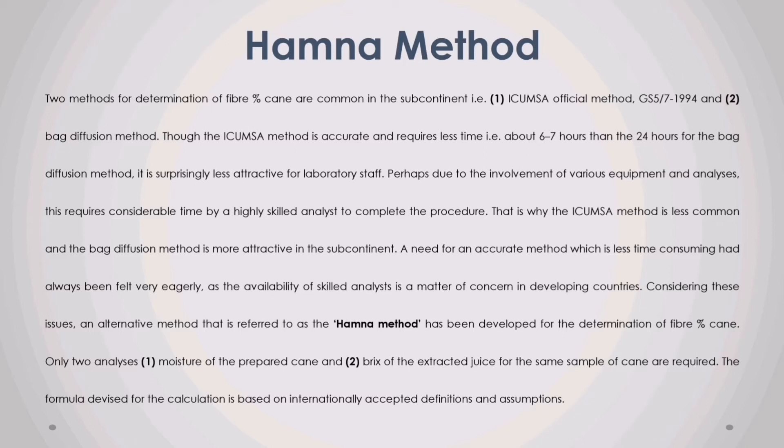A need for an accurate method which is less time-consuming had always been felt very eagerly, as the availability of skilled analysts is a matter of concern in developing countries. Considering these issues, an alternative method referred to as the Hamner method has been developed for the determination of fiber percent cane. Only two analyses are required: one, moisture of the prepared cane, and two, brix of the extracted juice for the same sample of cane. The formula devised for the calculation is based on internationally accepted definitions and assumptions.